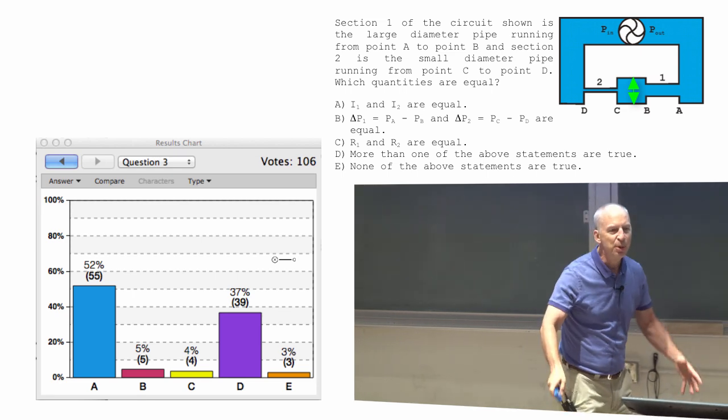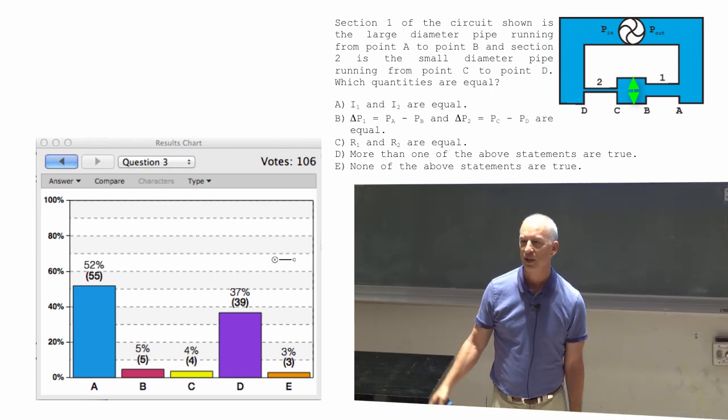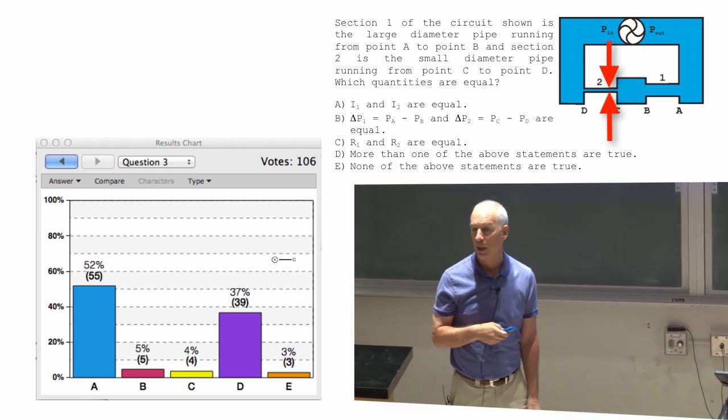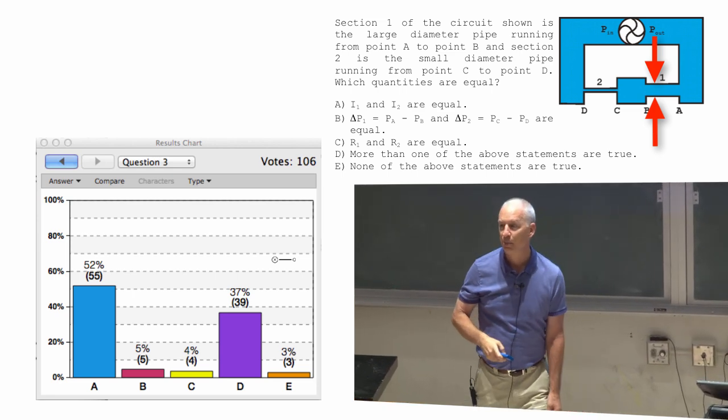At some point, the pipe is big enough that it's not the biggest resistance in the problem. This is the biggest resistance in the problem, because that's the tiniest pipe. This one might also be important, but it's not as big a resistance.